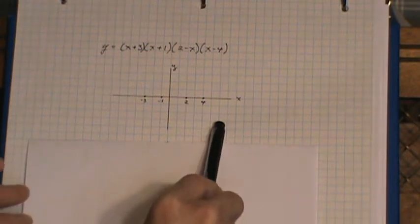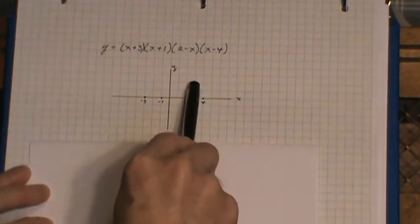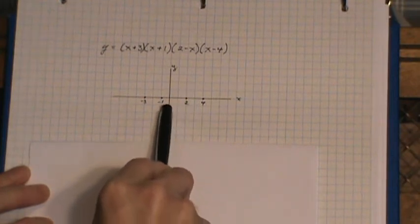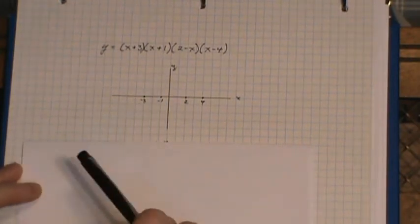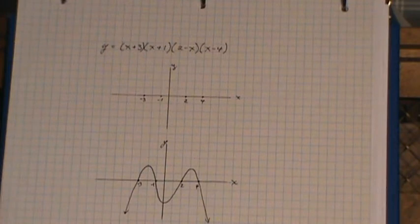So you end going down, and I just trace it backwards, up through the 4, down through the 2, back up through the negative 1, and down through the negative 3. And that's what it looks like. It's an M-shape, an upside-down 4th power polynomial.